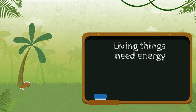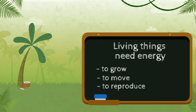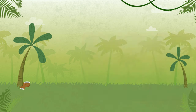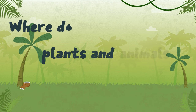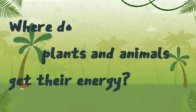Living things need energy to grow, to move, and to reproduce. Living things need energy to survive. Where do plants and animals get their energy from? To answer this question, let's look at a food chain.